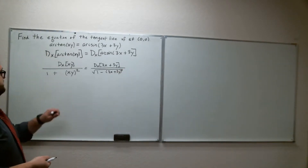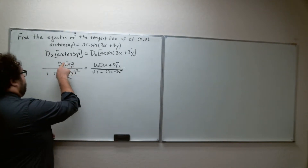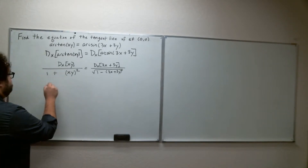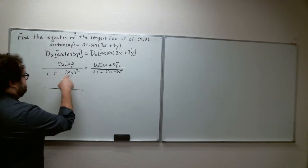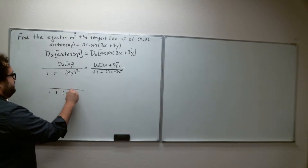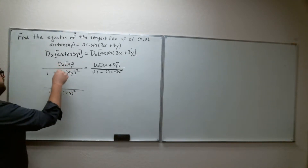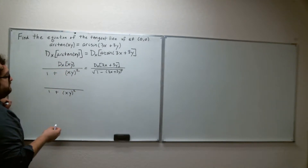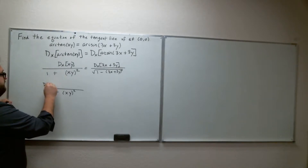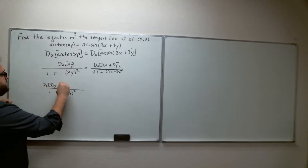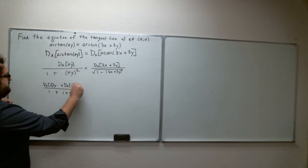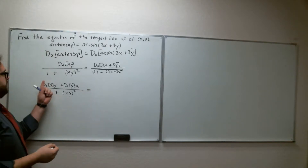Now let's take care of both numerators. The left-hand numerator involves x times y, which is a product rule situation, so we need to be careful. The denominators are pretty much done for now: 1 plus (xy) squared. Applying the product rule: the derivative of x times y, plus the derivative of y times x. That's our product rule application.